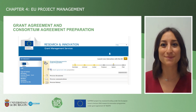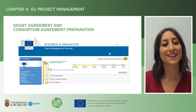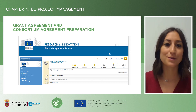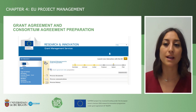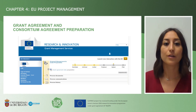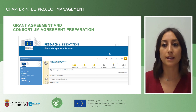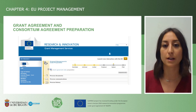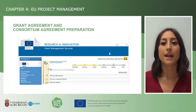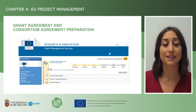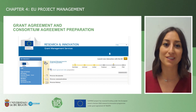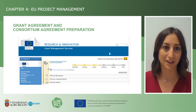Once the proposal has been approved, the next phase is grant management and consortium agreement preparation. You will find this information in your project area in the EU portal, where you will see specific templates for the grant agreement data preparation. There are also specific workshops and videos from the European Commission about grant management and consortium agreement.